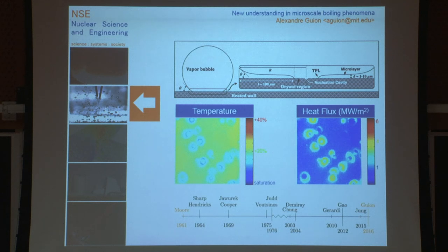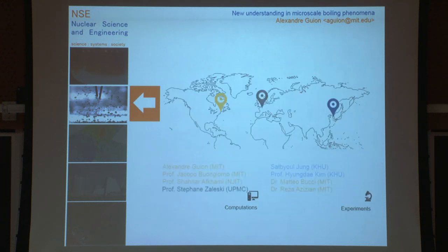A lot of people care about this. The first observation of microlayer was in 1961 by Moore. I just highlighted a few experimental and modeling work that's been done since then. It's been over 50 years that people have put considerable time and resources into understanding how these layers form and evaporate. Today, 2016, I'll show you the first generally applicable model for microlayer formation and the motion of contact lines.